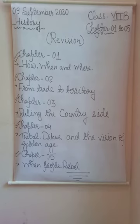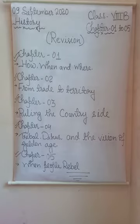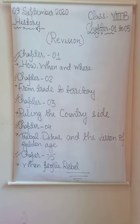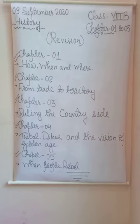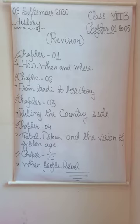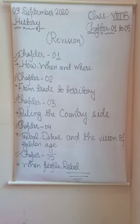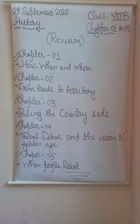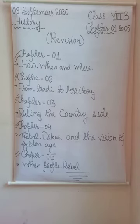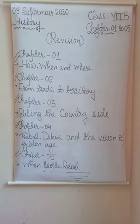The next topic is the need to improve agriculture. Important company officials began to feel that investment in land had to be encouraged and agriculture had to be improved. That is why in 1793, the company introduced the Permanent Settlement. According to the Permanent Settlement, the Rajas and Taluqdars were recognized as Zamindars, and they were asked to collect rent from the peasants and pay revenue to the company, which was fixed permanently.